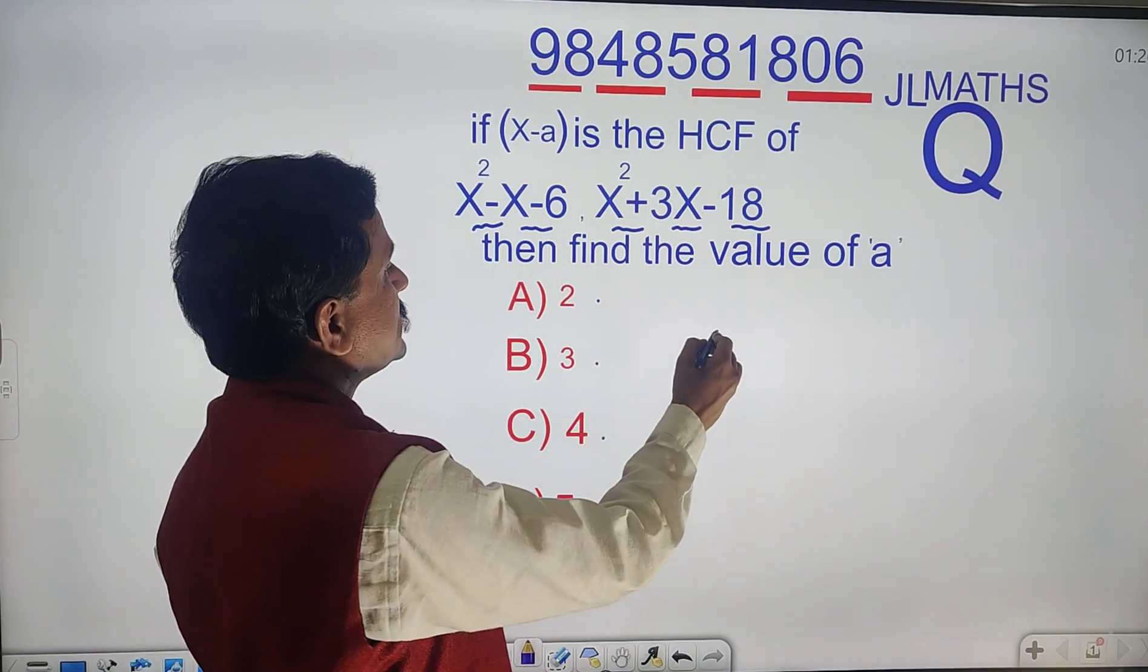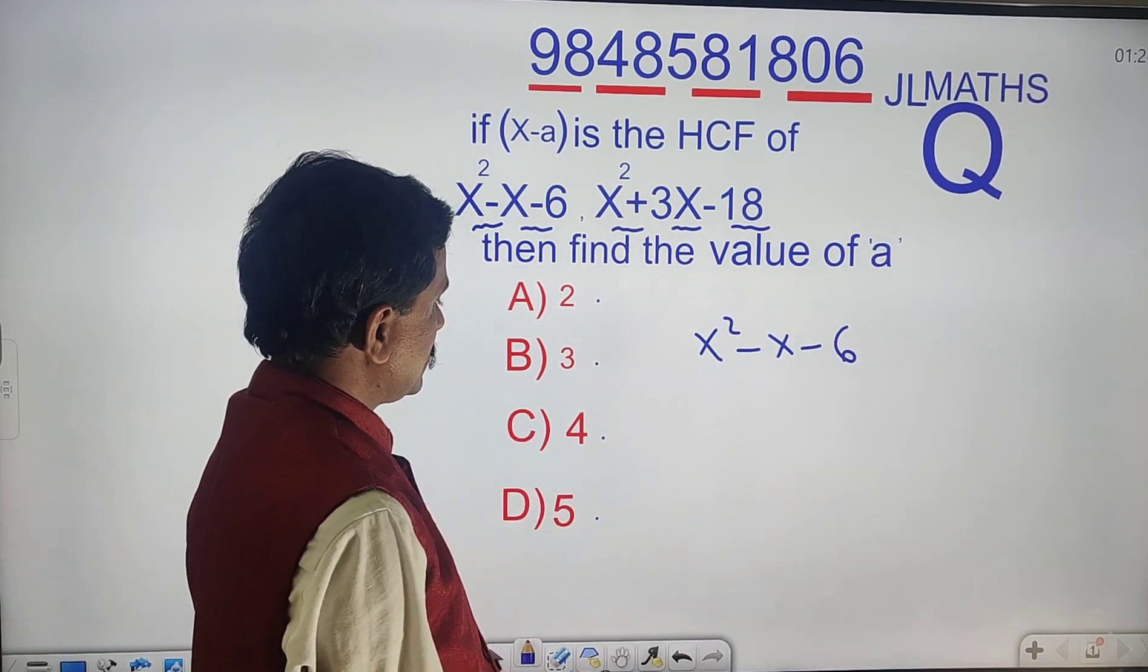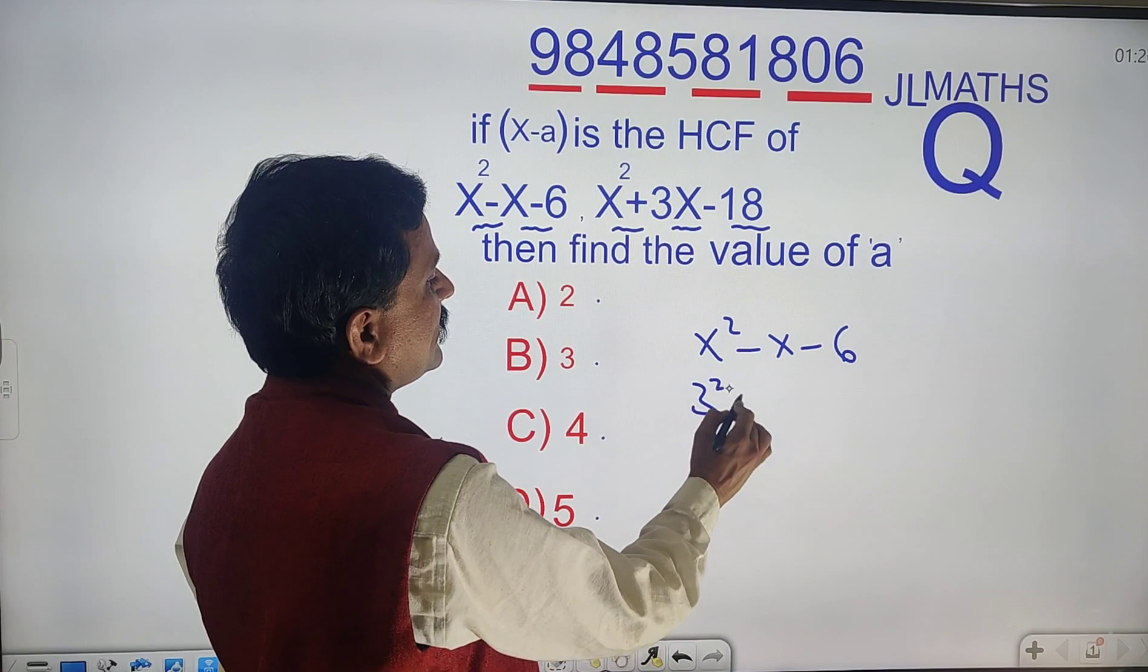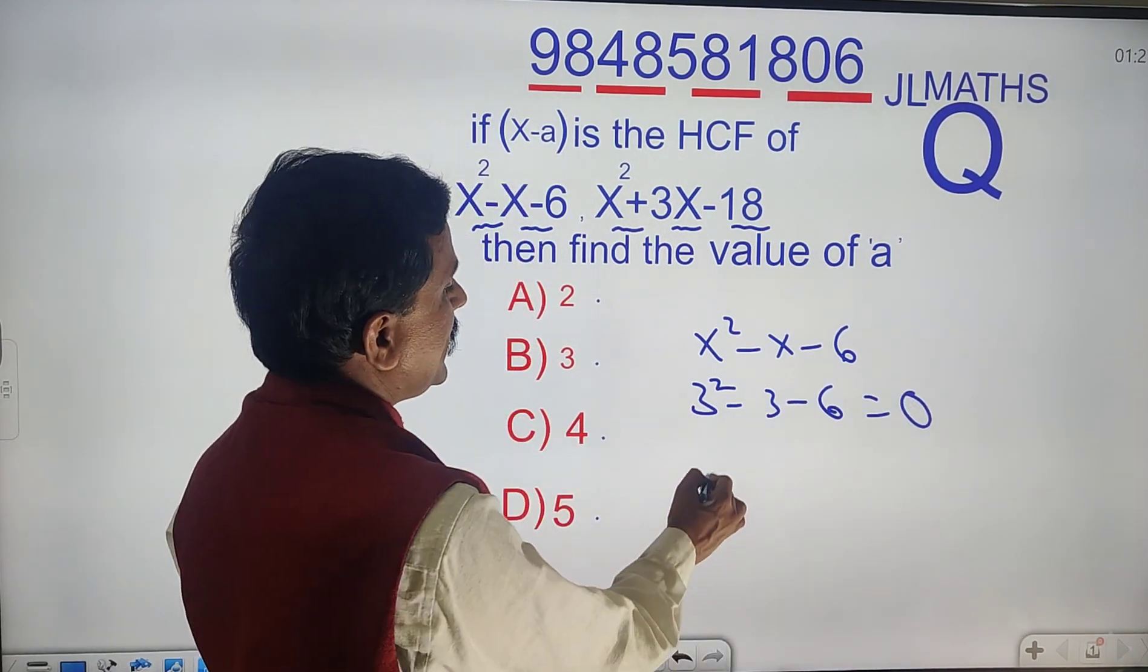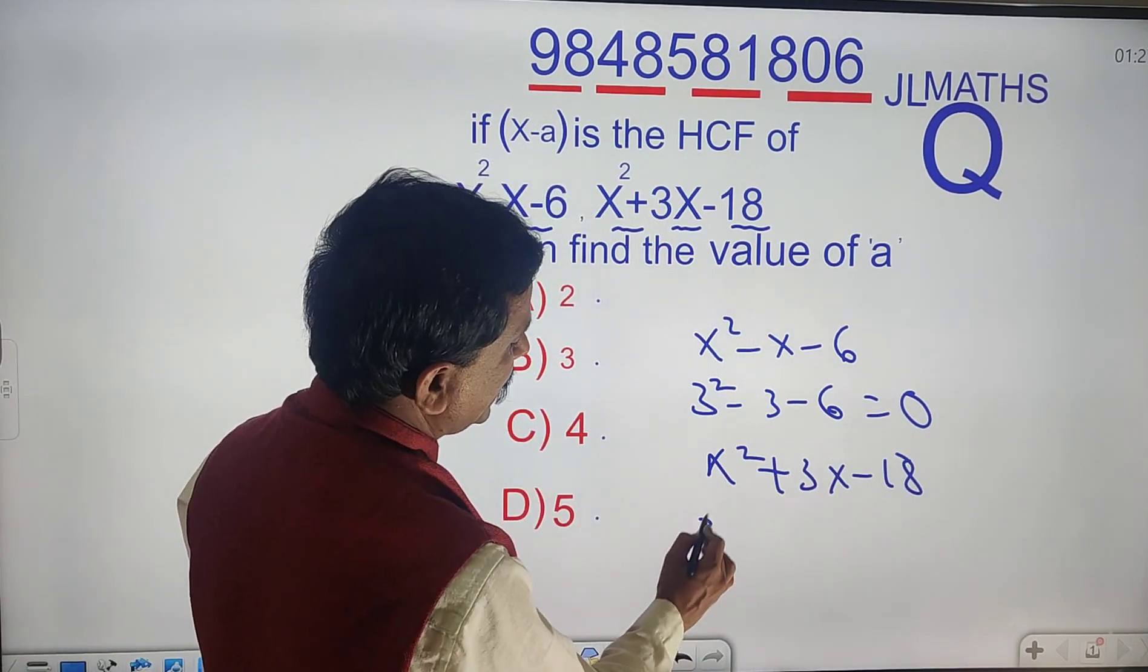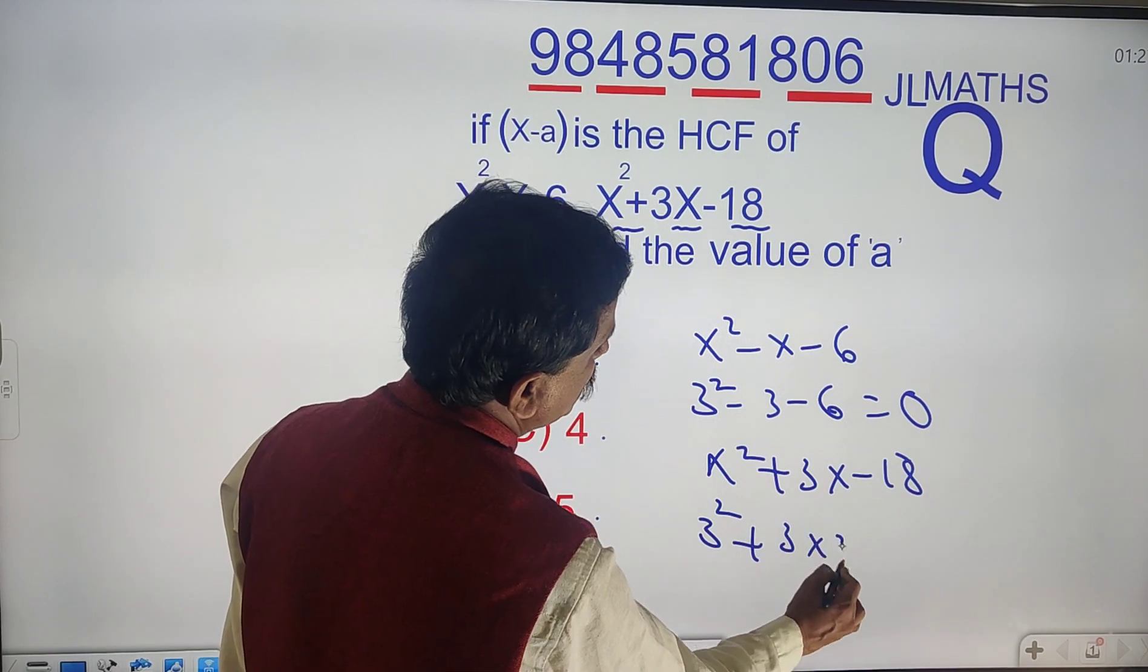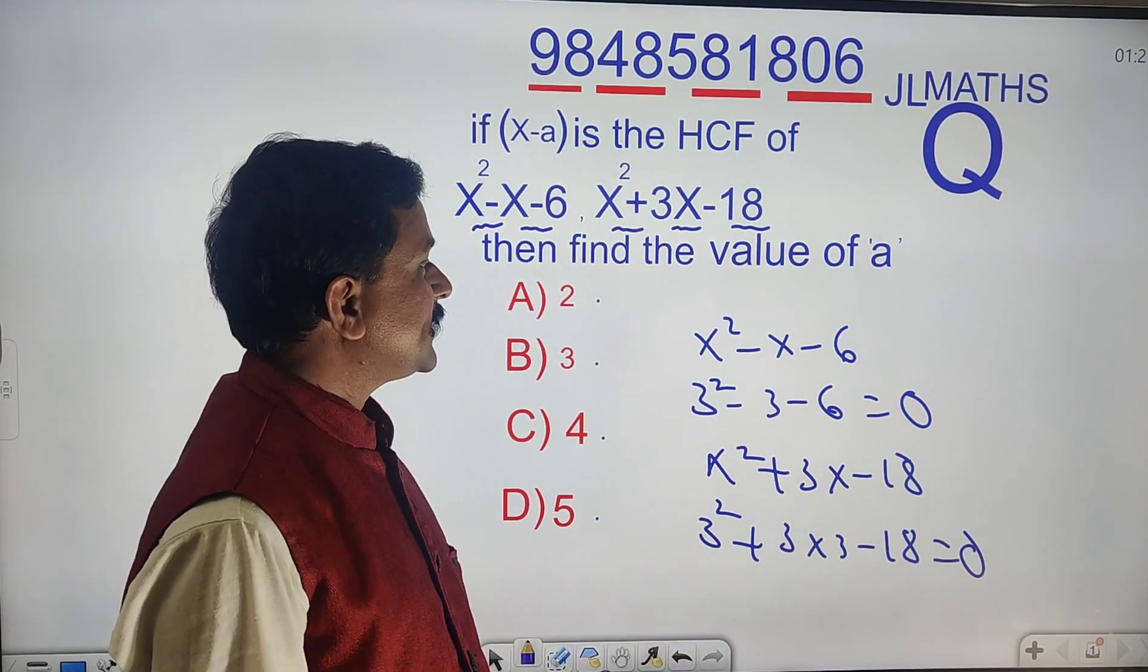Suppose x square minus x minus 6. Suppose x equals 3. 3 square minus 3 minus 6, that is equal to 0. x square plus 3x minus 18, suppose x equals 3. 3 square plus 3 into 3 minus 18 is equal to 0.